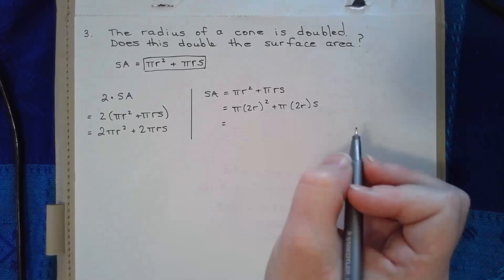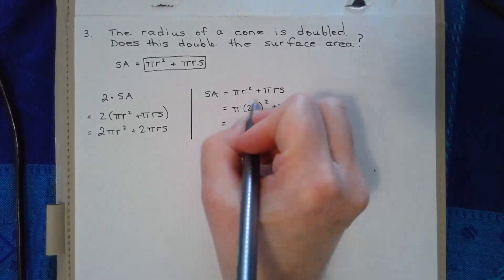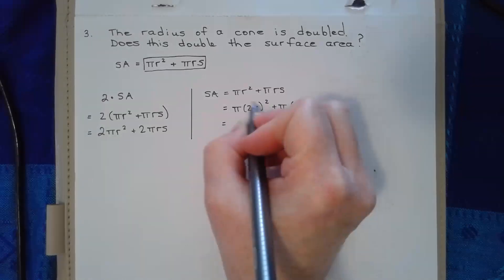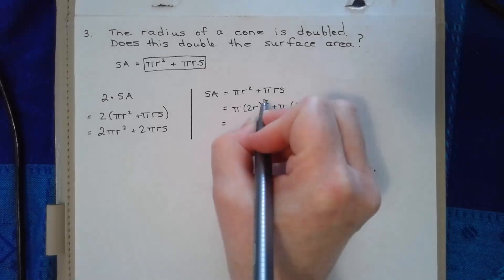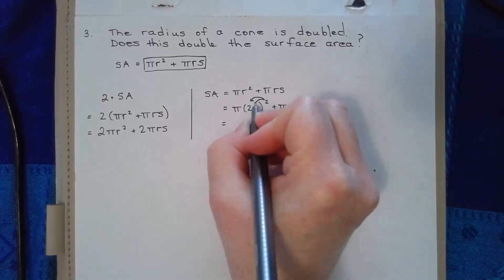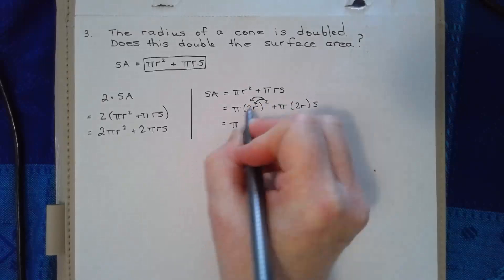So I have two r squared. If you remember when you have a bracketed expression to an exponent, the power goes with both pieces. So it would be pi times two squared, which is four, and then r squared.